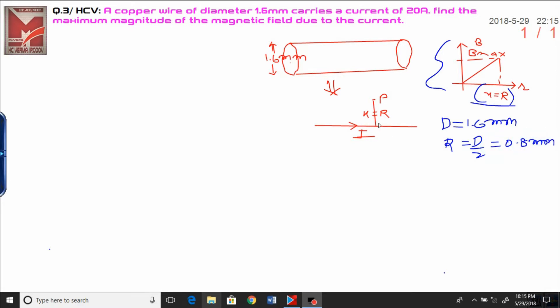Now, if this is a simple wire at distance point p that is equal to r, due to current magnetic field is given by - because length is not given, that is why we have to use the formula of magnetic field due to infinite conductor, that is mu naught i upon 2 pi r.